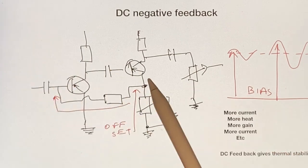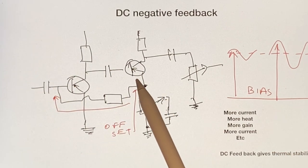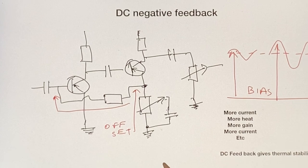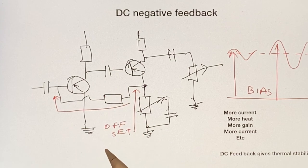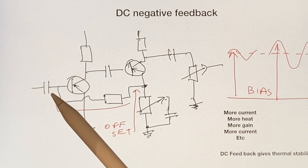This calms down that tendency to thermal runaway. So the DC feedback is giving us thermal stability. That is one of the reasons why that resistor is there in these circuits.